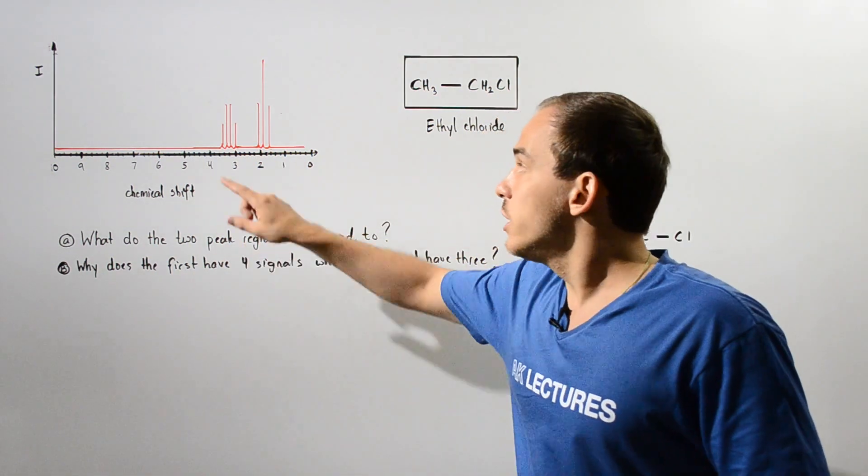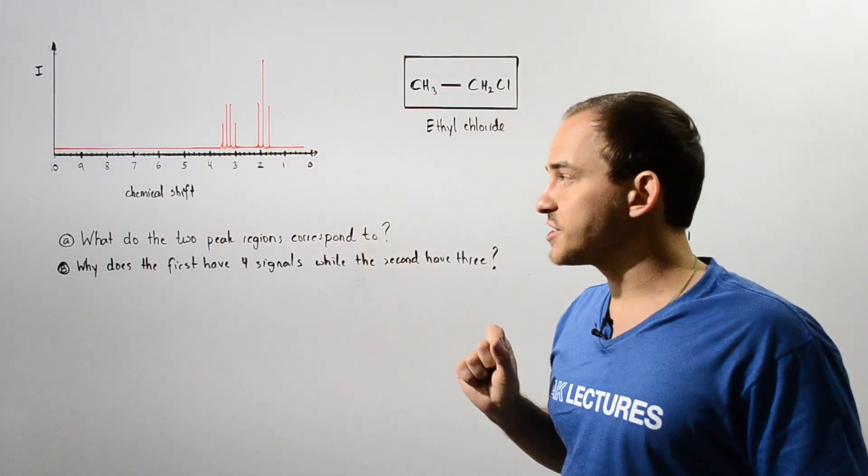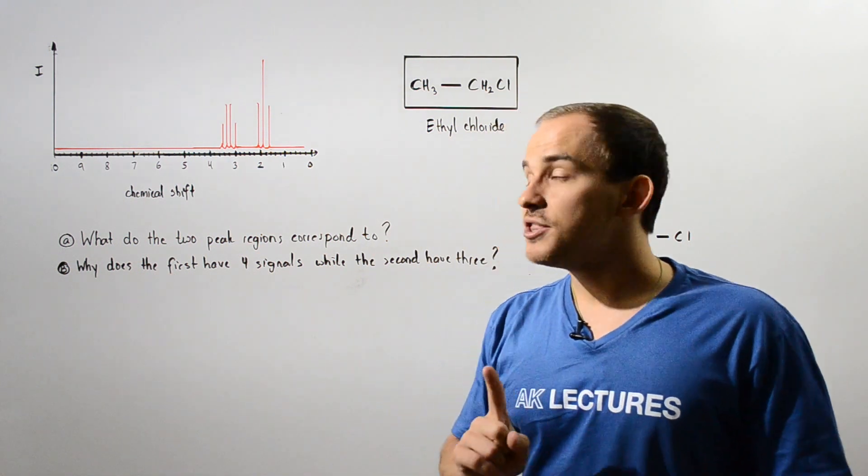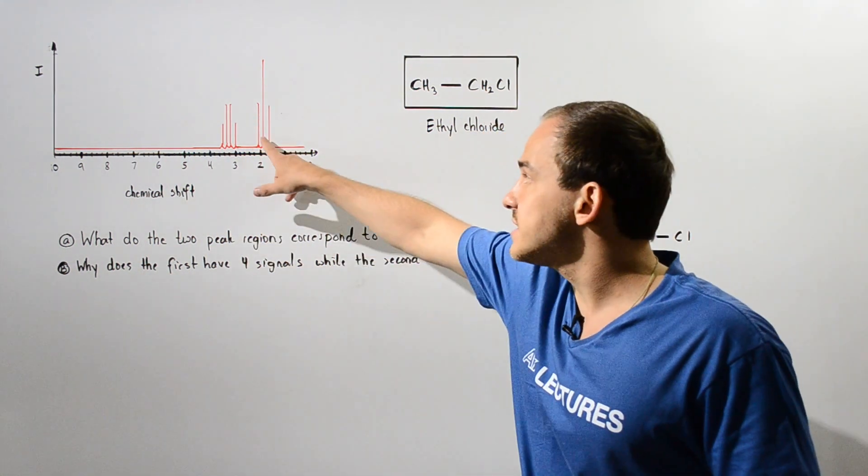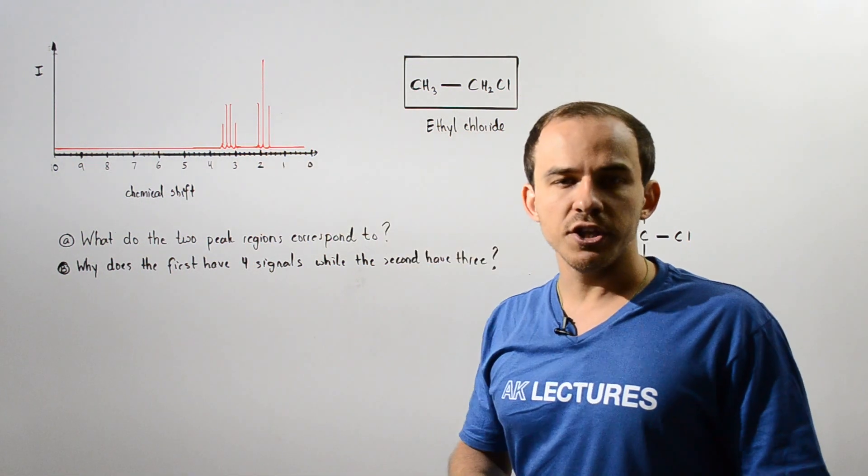Now we want to answer the following two questions. What do the two peak regions correspond to, and why does the first region consist of four signals while the second region consists of only three signals?